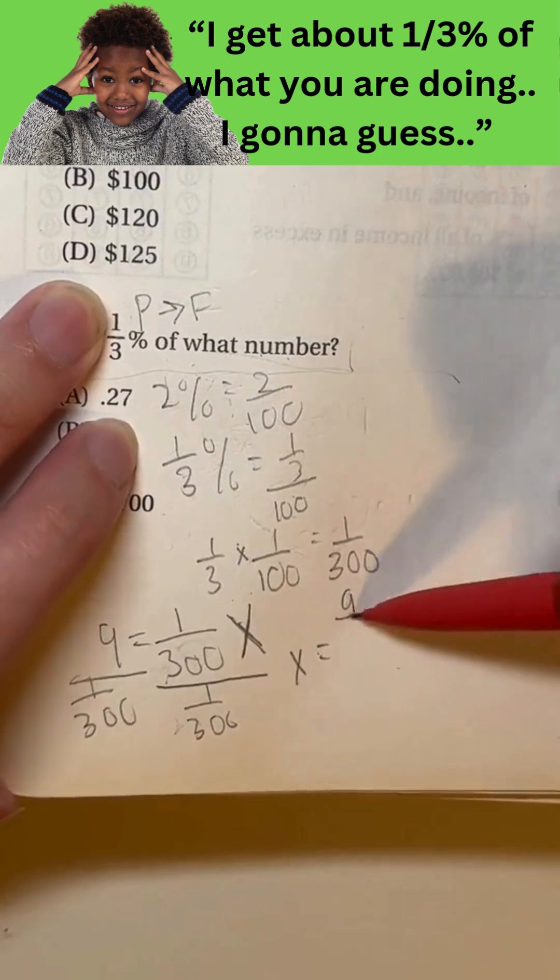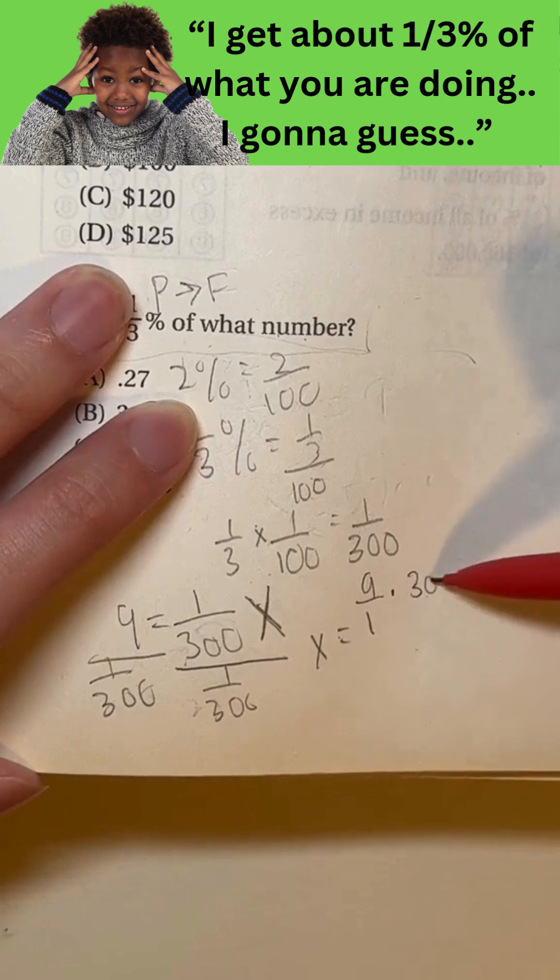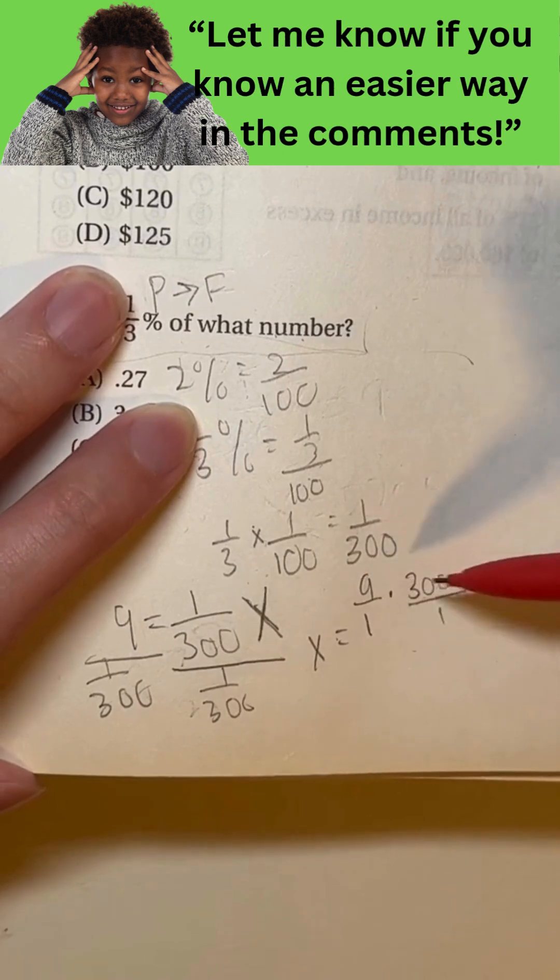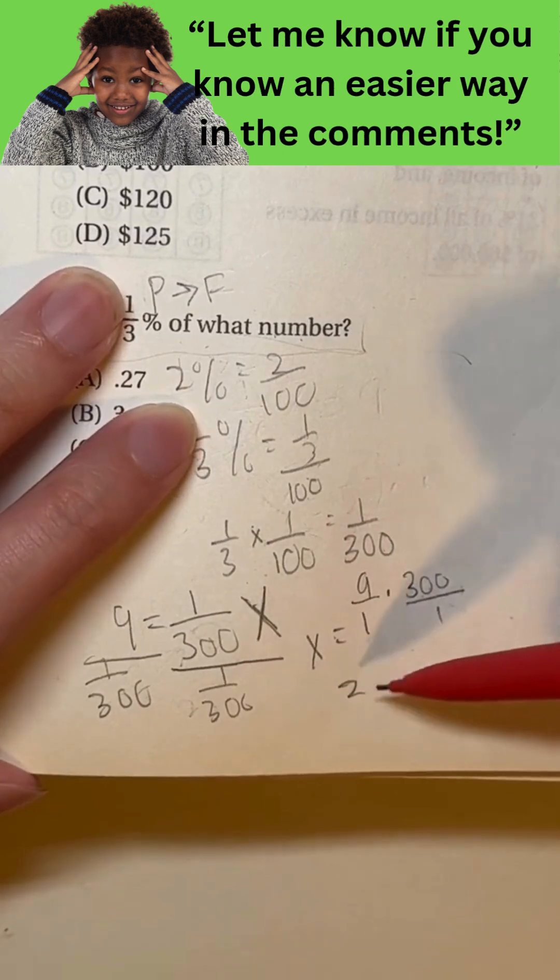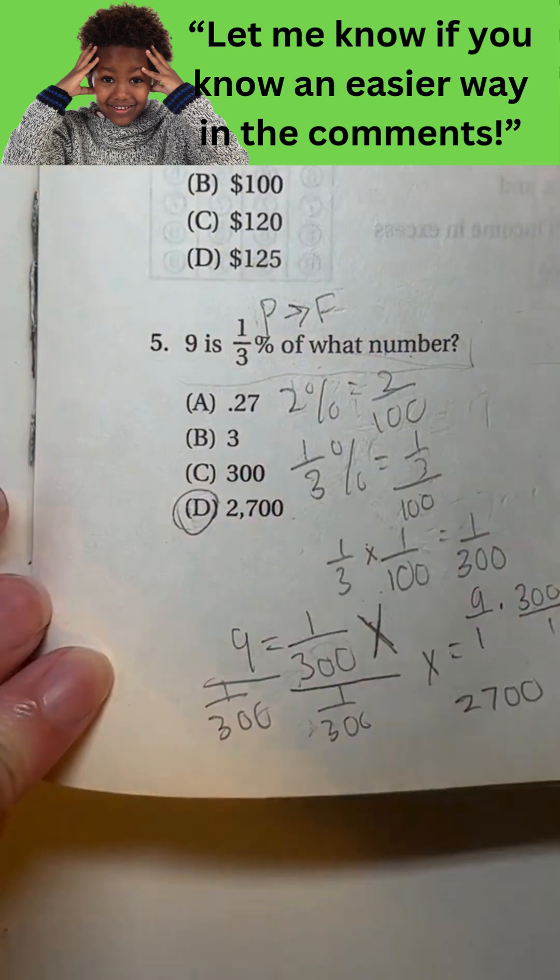Keep 9, change division to multiplication, and flip this around. So it would become a 300. 9 times 300 is 2,700. So D is the answer.